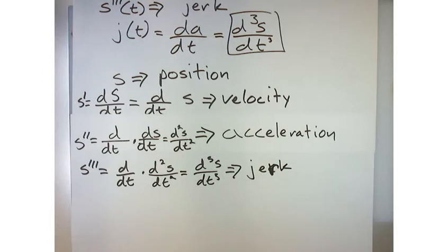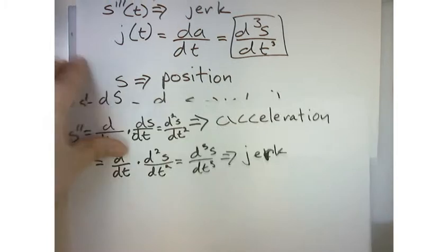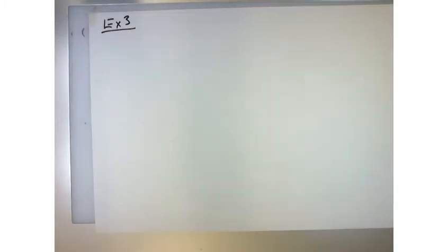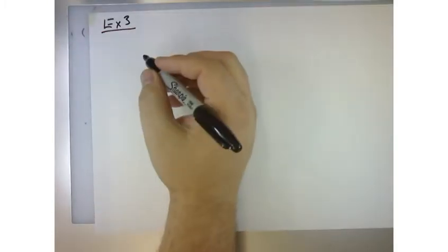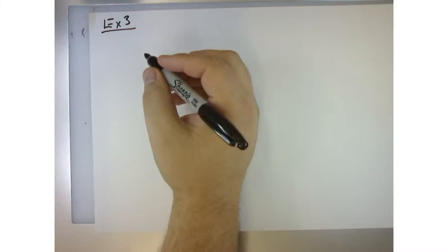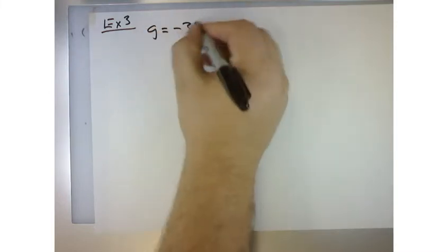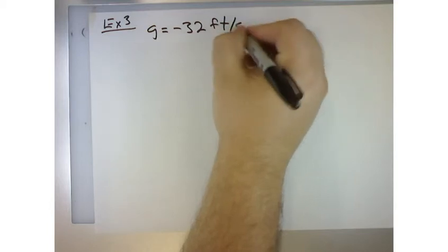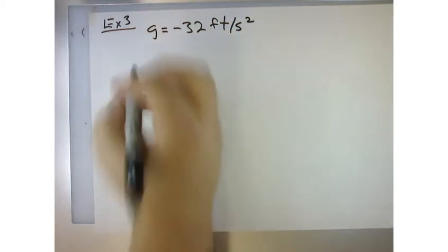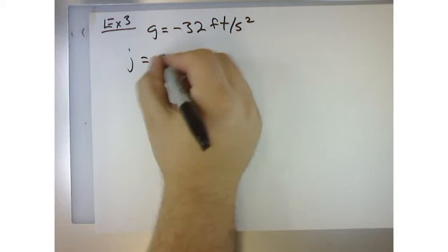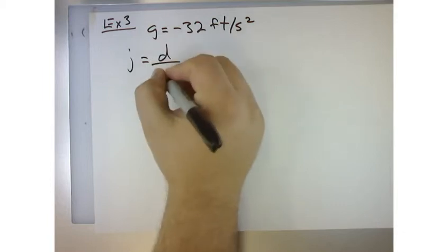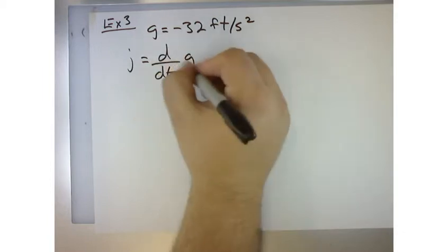So now I wrote all that stuff down because example number three says the jerk is caused by a constant acceleration due to gravity where g is equal to negative 32 feet per second squared. So jerk is d dt of g is zero.